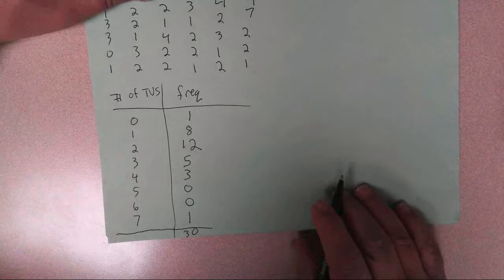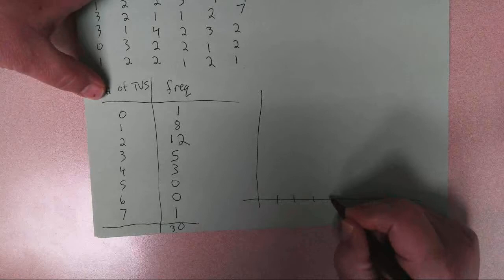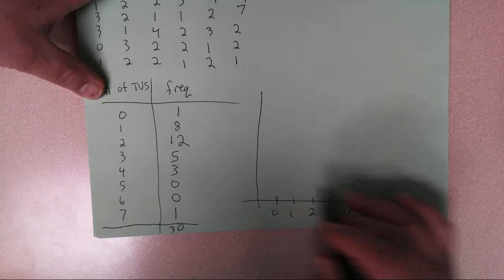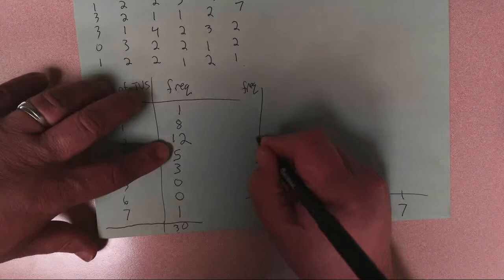So now what I can do is I can draw what they call a histogram that gives me a picture of the data. And along this axis, I'm going to put the number of TVs. So maybe 0, 1, 2, 3, 4, 5, 6, 7. And then this is going to be the frequency. So this needs to go up at least to 12. So maybe I'll do 2, 4, 6, 8, 10, 12.